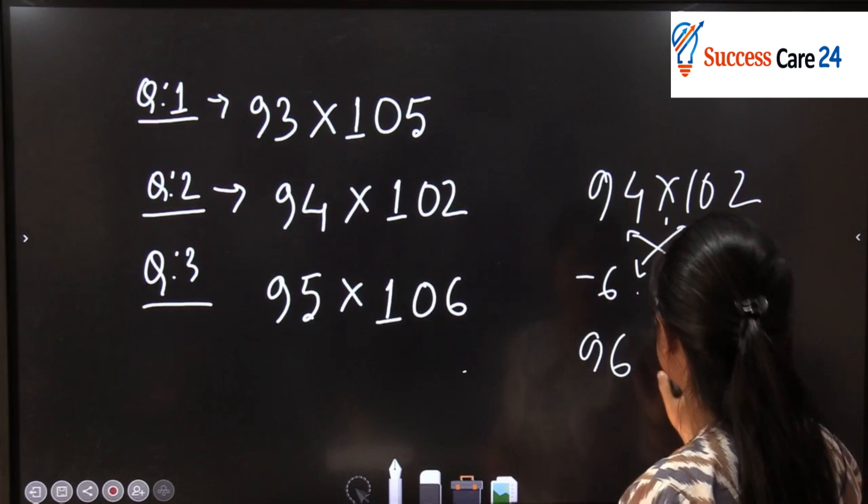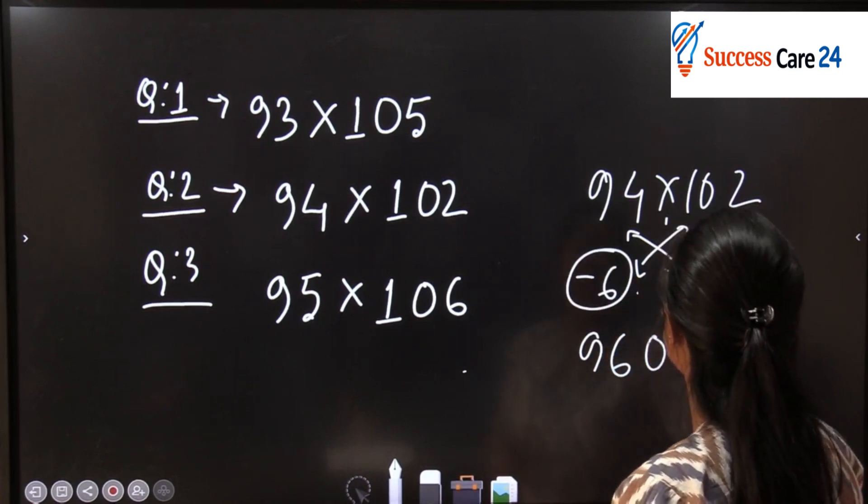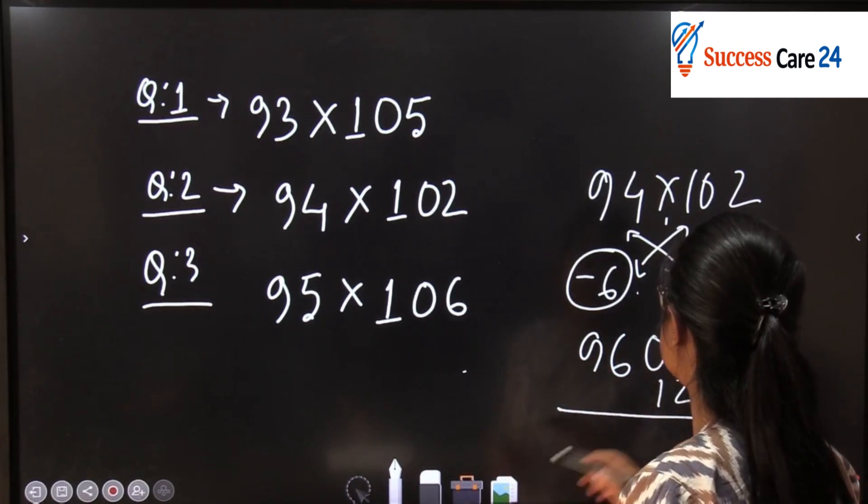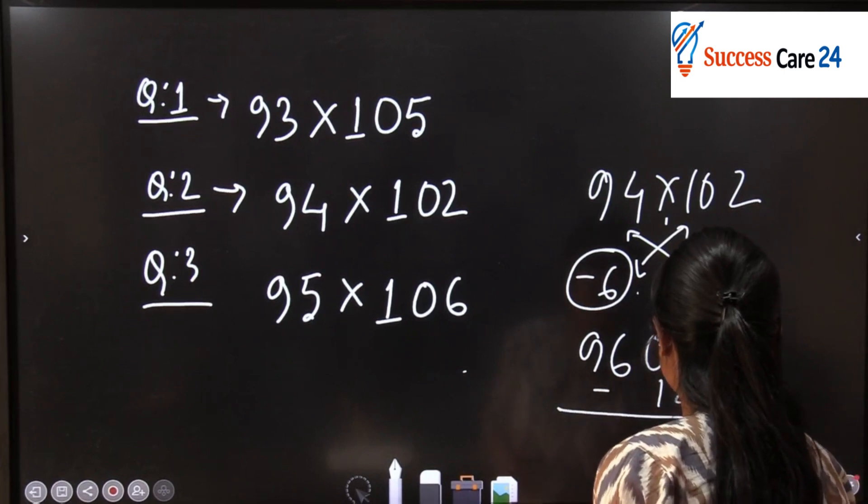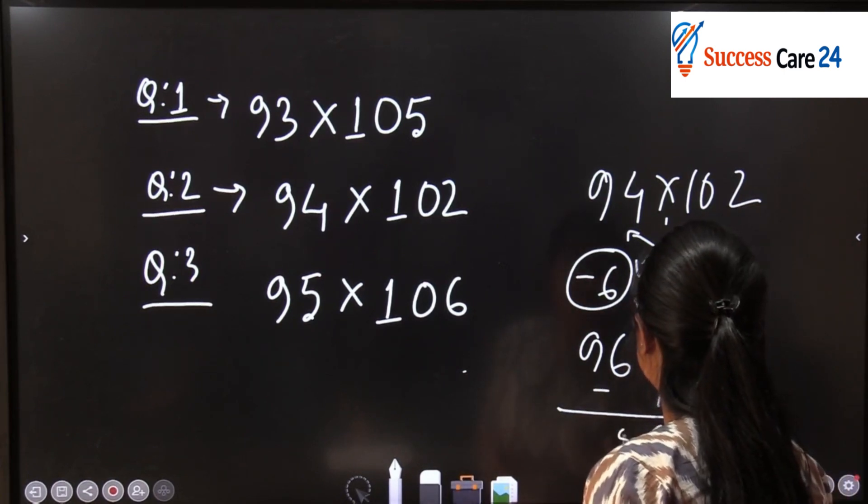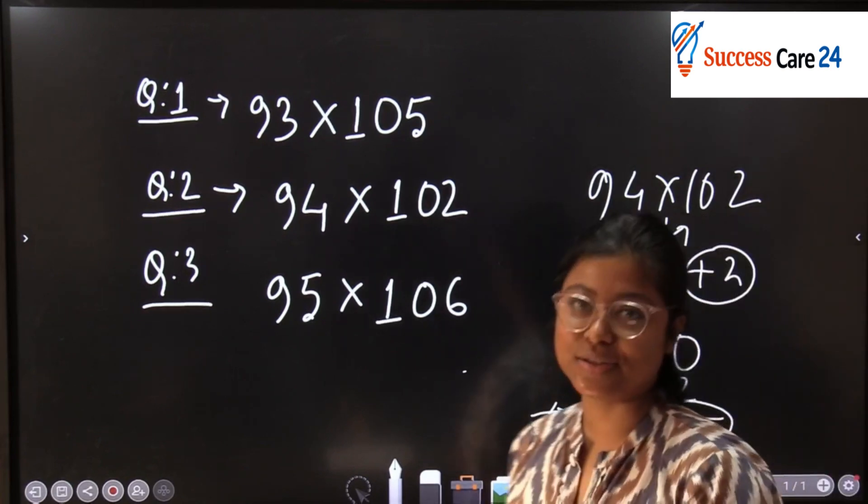So with 96 put two zeros. And subtract 6 into 2, that means 12, you will subtract from here. So the result will be 88. And this is 96. So this is the answer of 94 into 102.